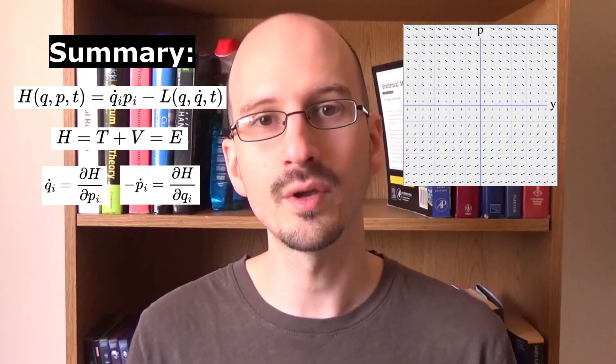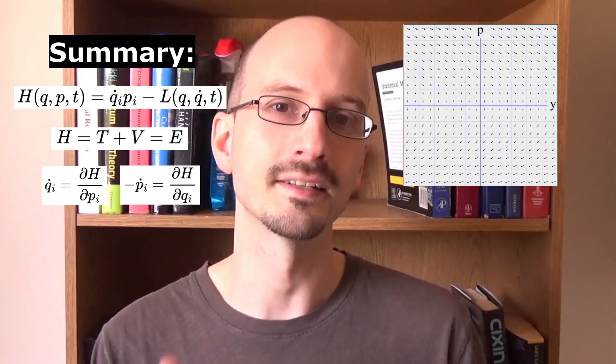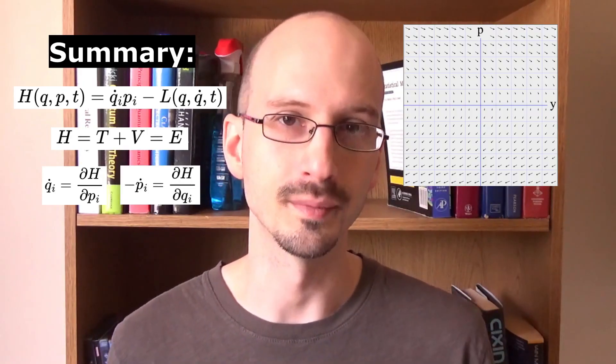We learned that Hamilton's equations of motion tell us how position and momentum changes with time. We learned about phase space and how we can represent one coordinate and its conjugate momentum on a two-dimensional graph.